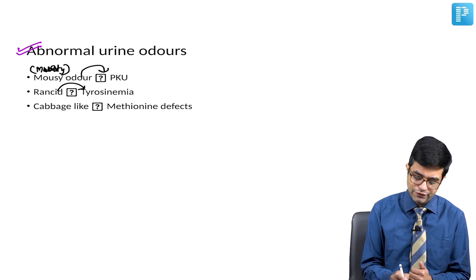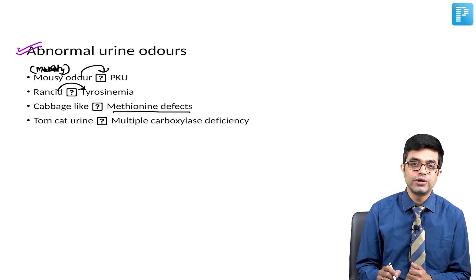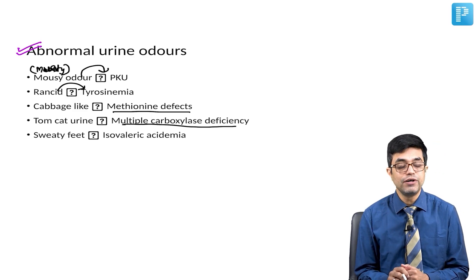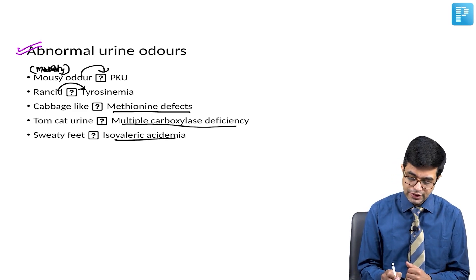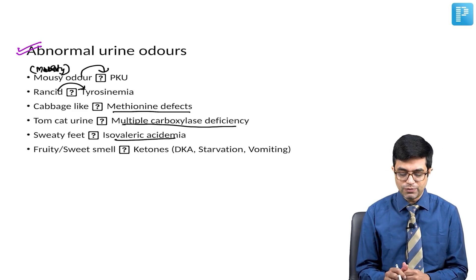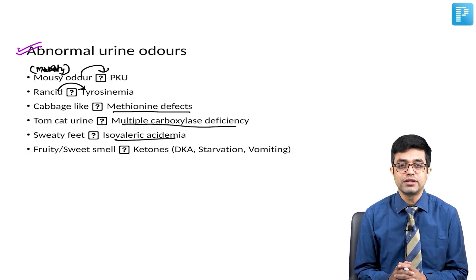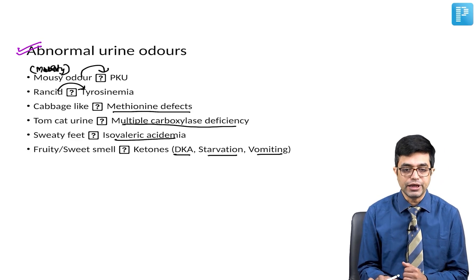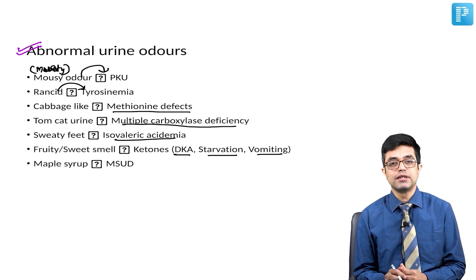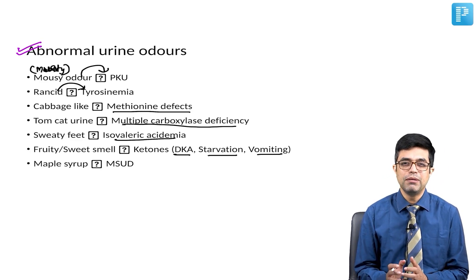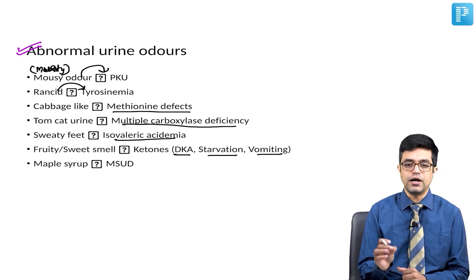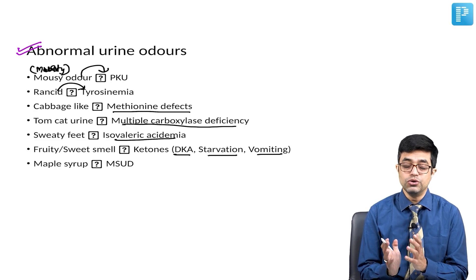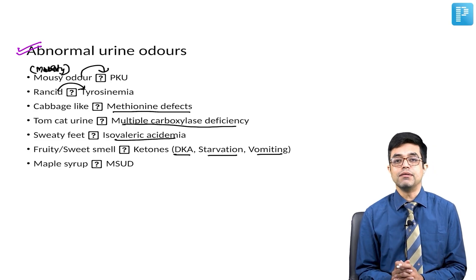Then you have cabbage-like odor, which is seen in methionine defects. You have tomcat urine odor, which is seen in multiple carboxylase deficiency. You have sweaty feet odor, which is seen in isovaleric acidemias. And you have fruity or sweet smell, which is due to ketones. Ketogenesis is commonly seen in diabetic ketoacidosis, starvation, and vomiting. And finally, we have maple syrup urine odor, which is seen in maple syrup urine disease. These abnormal urine odors are very important. The keyword for each and the underlying condition are useful clues. You may even get them in clinical MCQs.